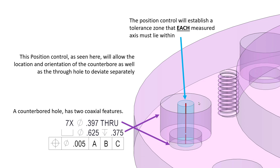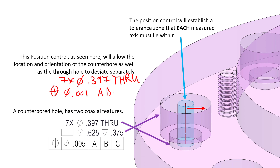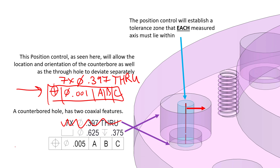This is fully supported by the ASME Y14.5 standard. Now if you don't want to control them to the same amount of position tolerance — in other words, maybe you want to give a little bit more freedom to the counterbore diameters since it's not as critical as the through hole diameter — you could easily come in here and say seven times the diameter of 0.397 for the through hole and apply a position tolerance to the through hole diametrically of maybe 0.001 with respect to A, B, and C. Now you can have a separate feature control frame for the through holes and a separate feature control frame for the counterbore diameters and their depth, controlling them differently if that's what you require as a designer.